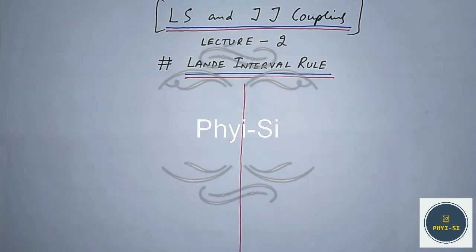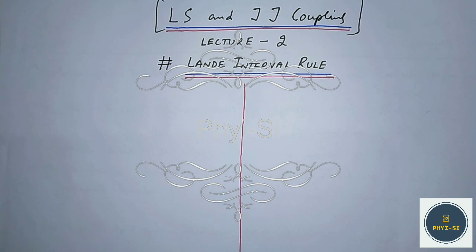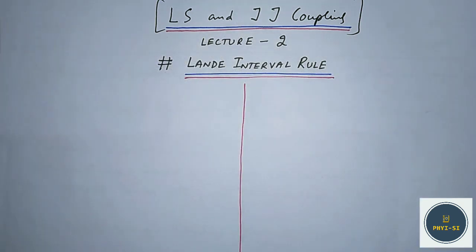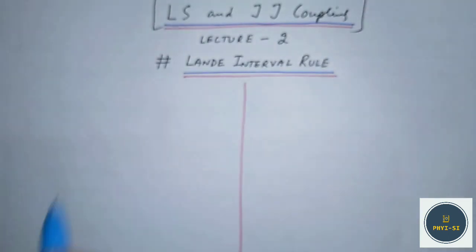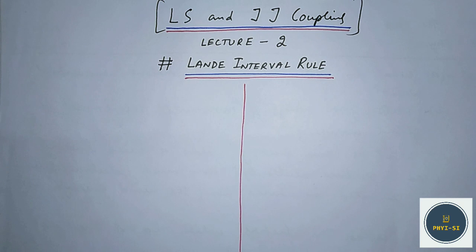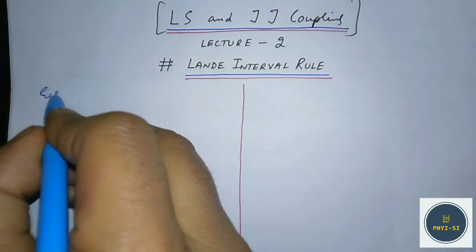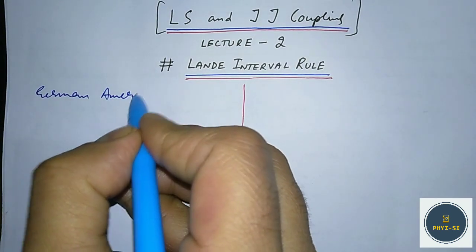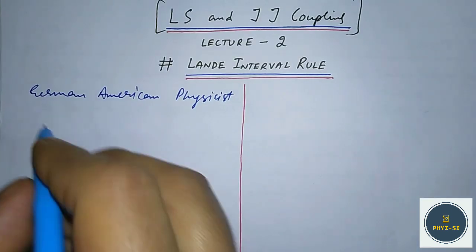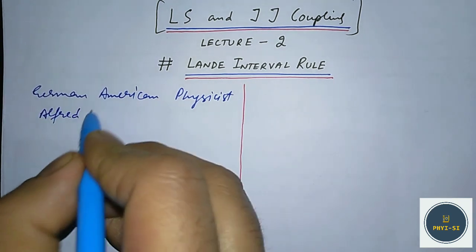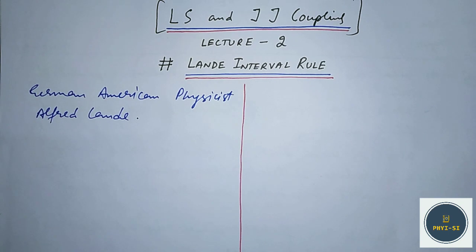Hello friends and welcome again to my channel. This is the second lecture about LS and JJ coupling, and in this particular lecture we will study about the Lande interval rule. This rule was first given by a German-American physicist named Alfred Lande.